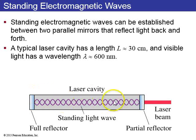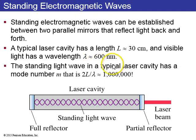So a typical laser cavity has a length of about 30 centimeters, and visible light has a wavelength of 600 nanometers, which is far less, or it's about a half of a micron, or a half of a thousandth of a millimeter. So a standing light wave in a laser cavity typically has mode numbers up around a million. So you can see there's lots and lots of about a million antinodes inside this laser cavity.